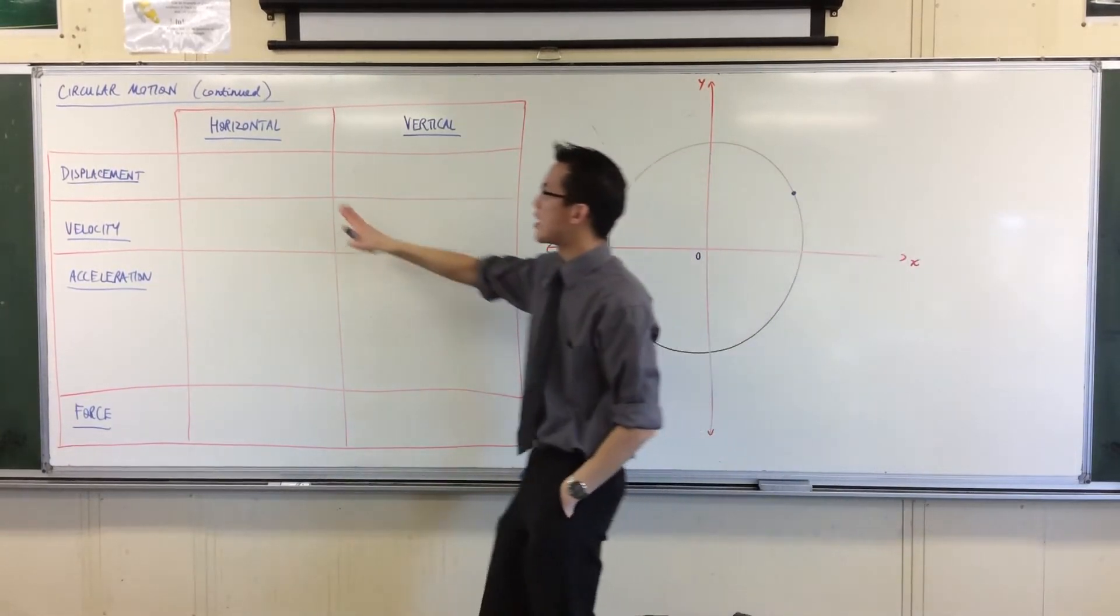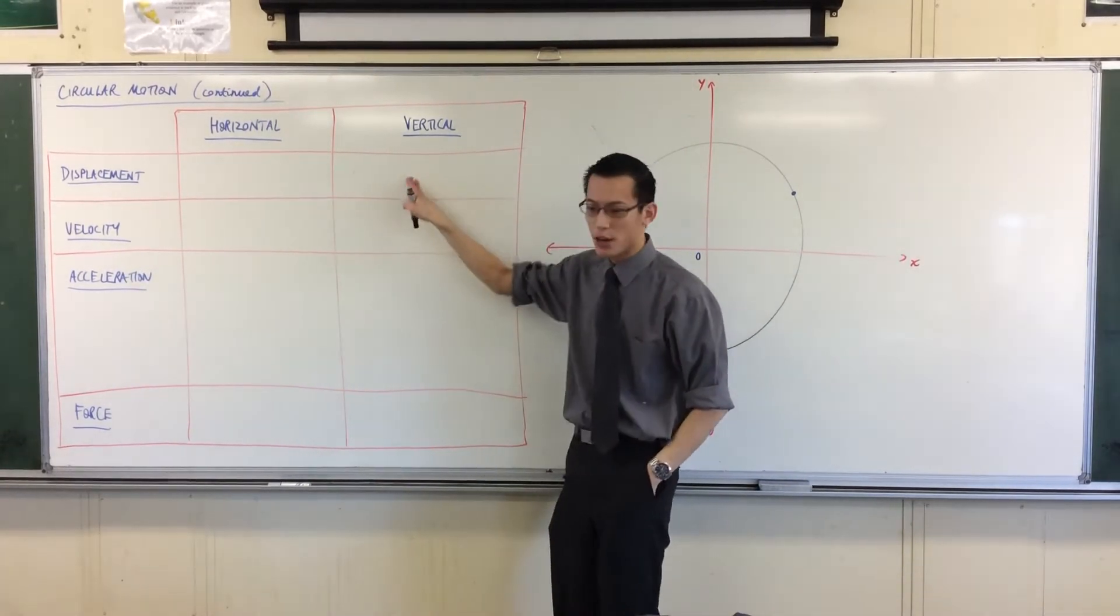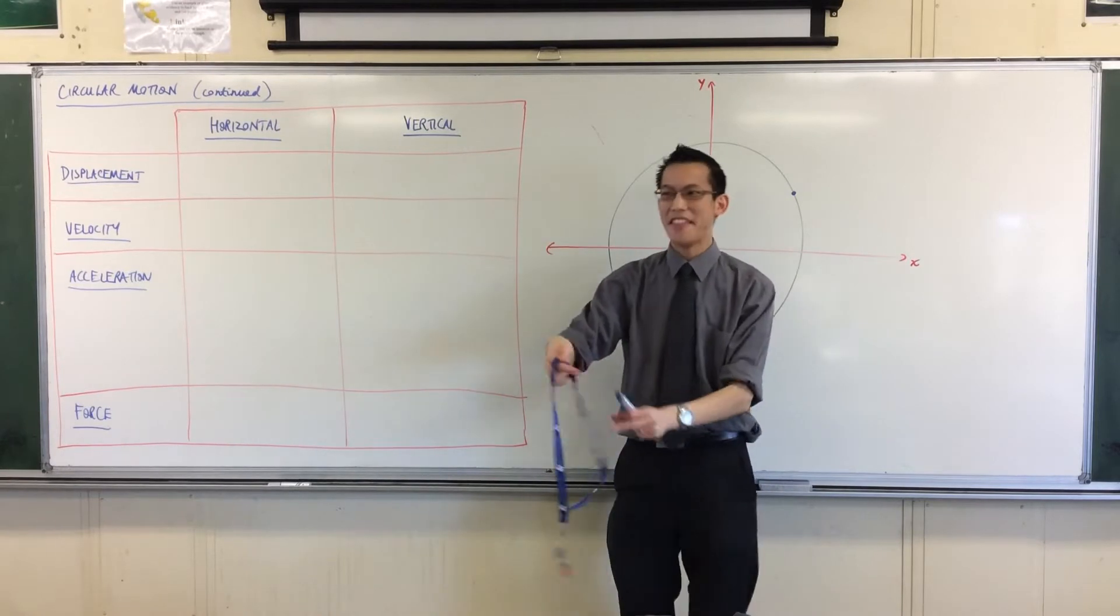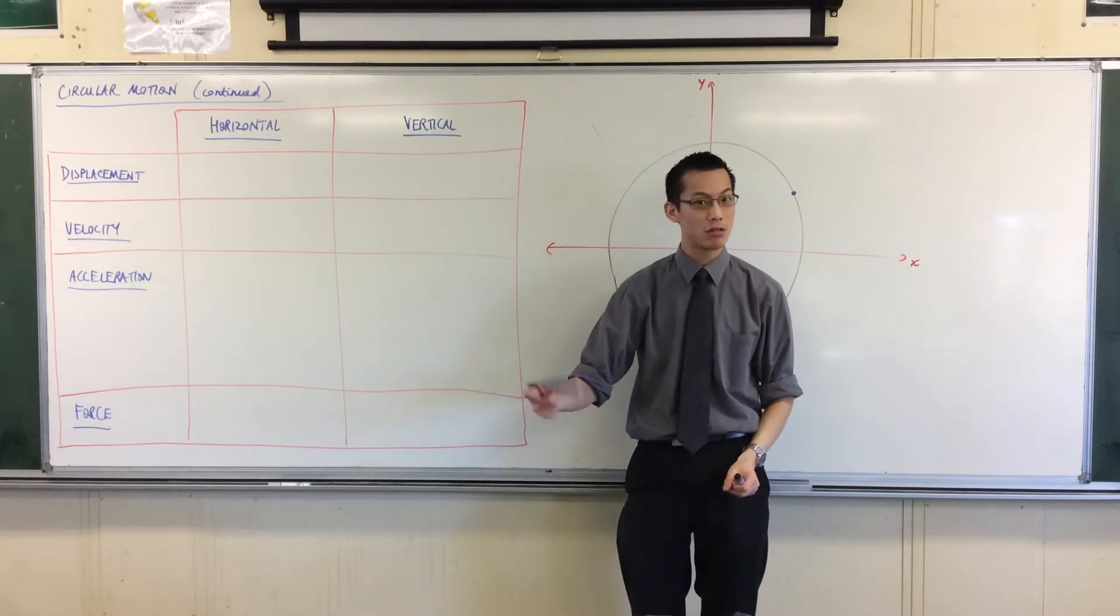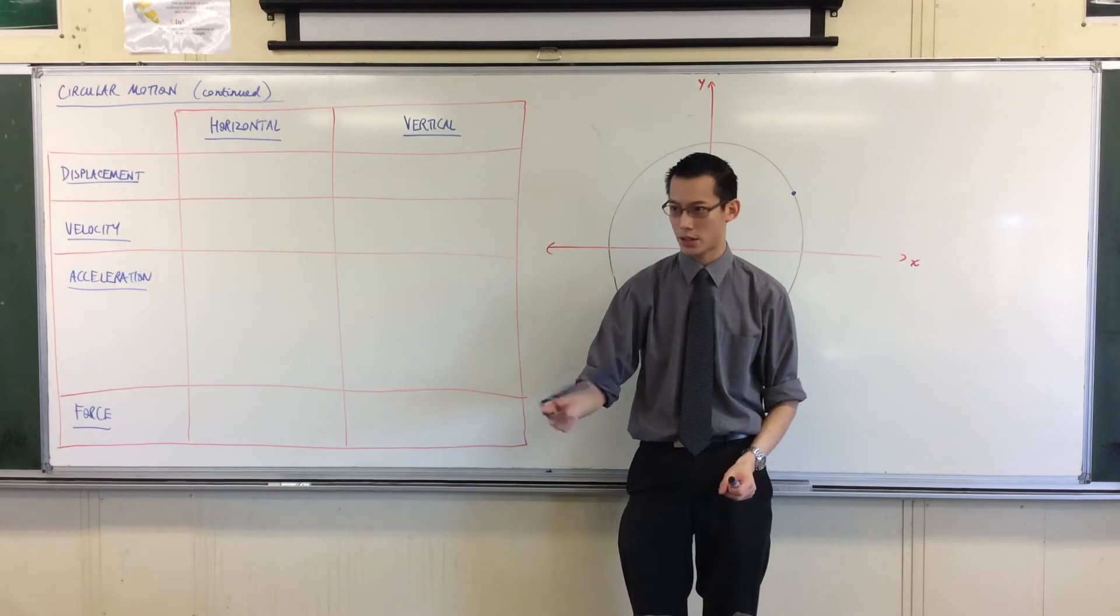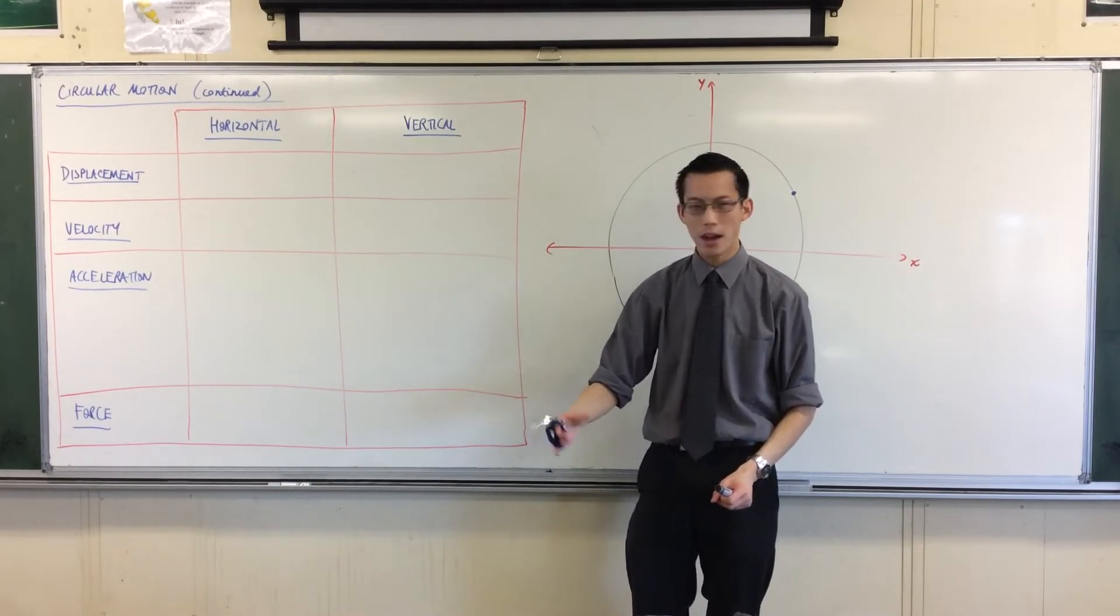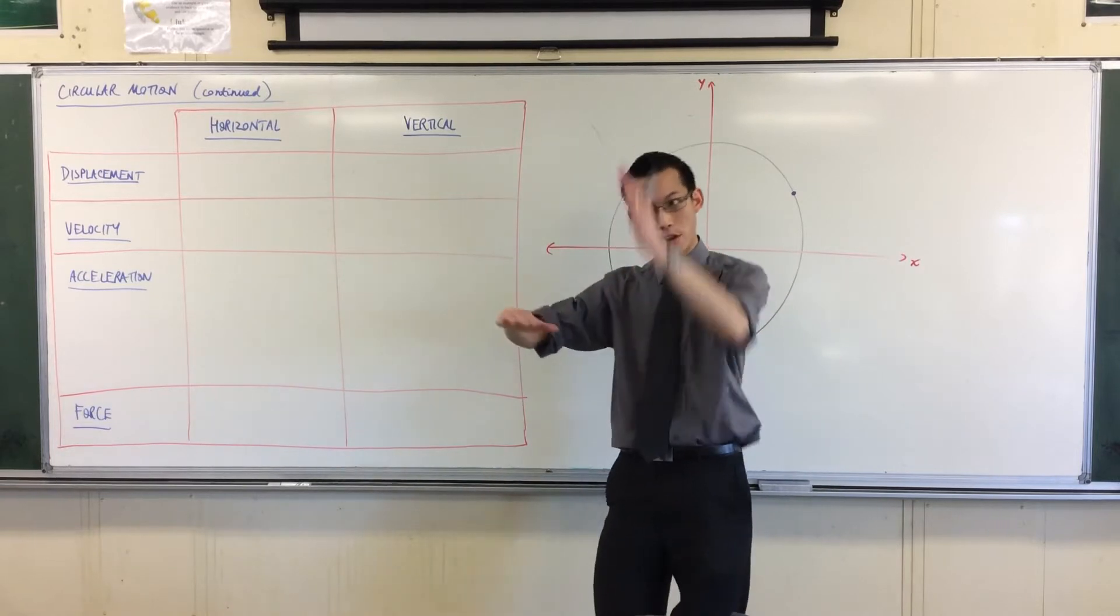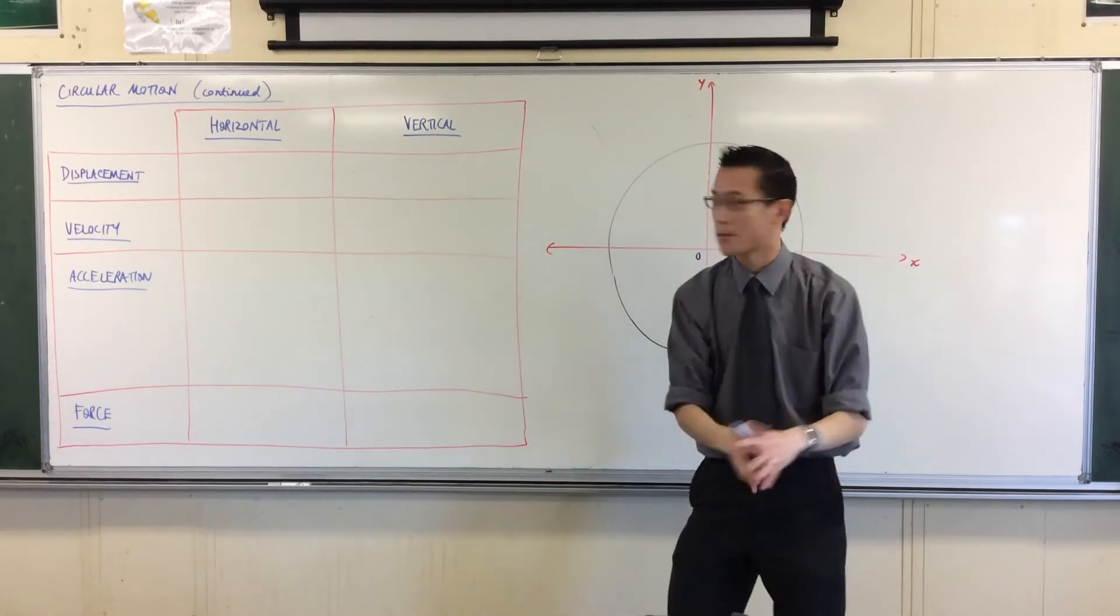So what we did was we started to think about the horizontal and vertical components of an object that is moving in a circle, okay? So we want to understand this, we want to see what's going on. And so we thought, as with projectile motion, we thought about horizontal and vertical components, and then we could go from there, right?